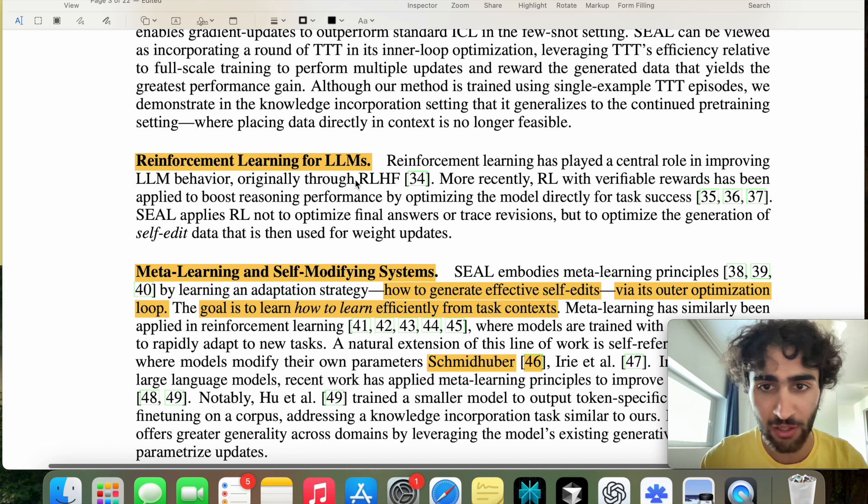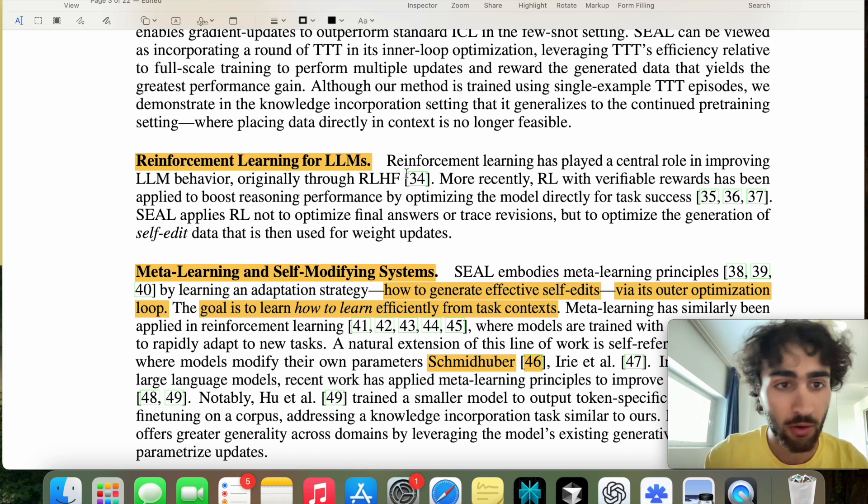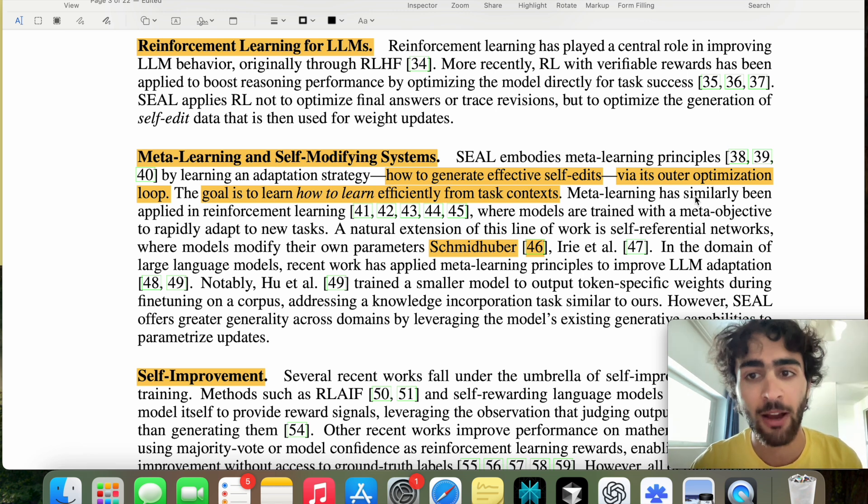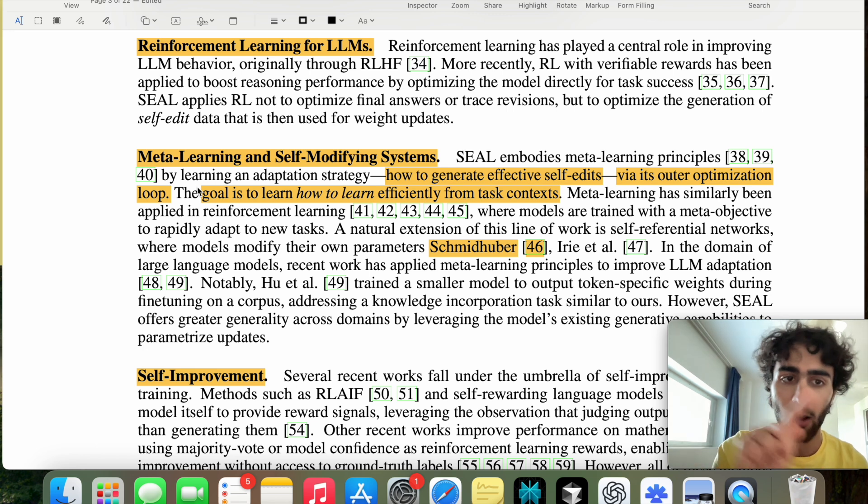And now, yeah, reinforcement learning for LLMs. They talk about RLHF. This one is different, though. So SEAL applies not to optimize final answers or trace revisions, but to optimize the generation of self-edit data that is then used for weight updates. So it's more of a meta strategy, which is literally what the next point talks. So how to generate effective self-edits, and this is done by the outer optimization loop in this reinforcement learning process with the policy improving these generation of self-edits.